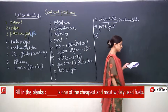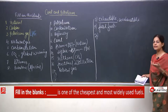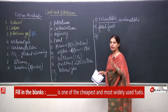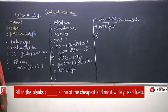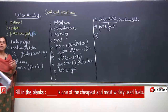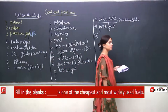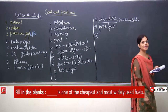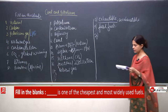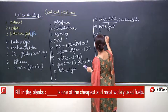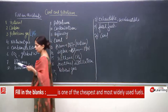Number 20: dash is one of the cheapest and most widely used fuel. It should be cheap and used on a wide range. In comparison, coal is one of the cheapest and most widely used fuels.